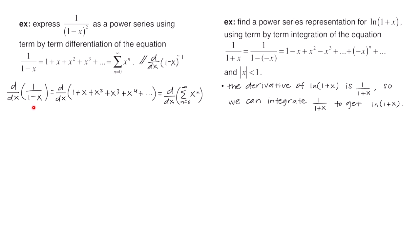To take the derivative of 1 over 1 minus x, I rewrote it as 1 minus x to the negative 1. Using the chain rule, we bring the negative 1 to the front, leave the inside the same, subtract 1 from the exponent, and then times by the derivative of the inside which is negative 1. Multiplying the two negatives gives a positive, and moving to the denominator gives us 1 over the quantity 1 minus x squared — which is exactly what we're trying to rewrite as a power series.